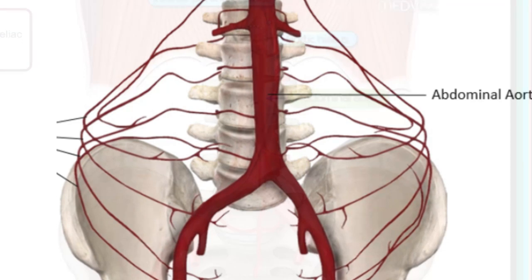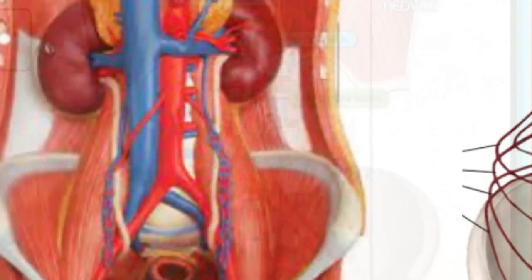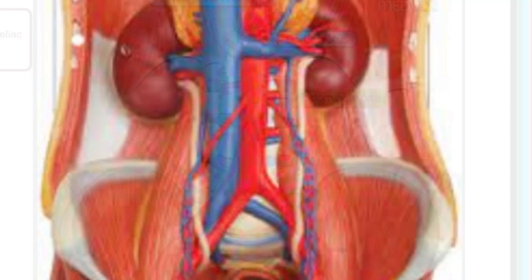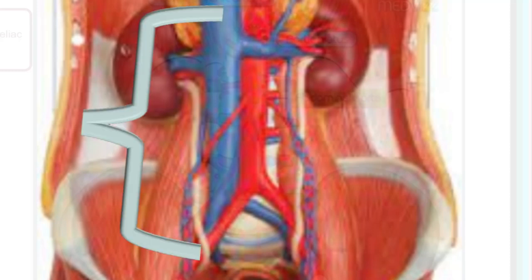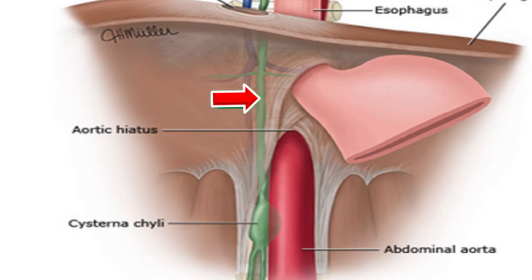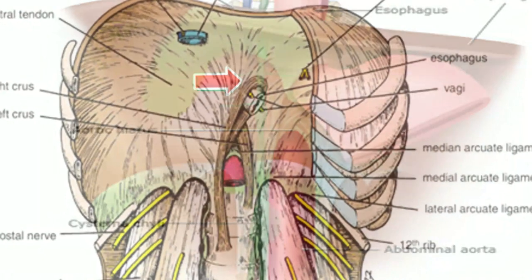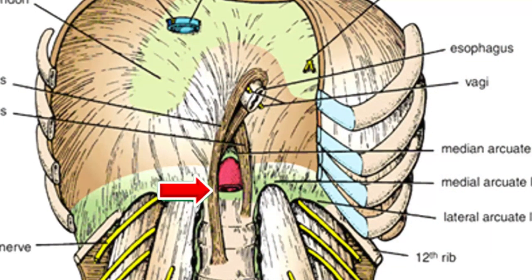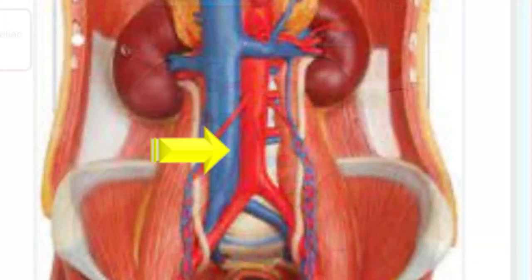On the right side, structures forming the relation include the cisterna chyli, the thoracic duct — which entered with the aorta at the T12 aortic opening — the azygous vein, the right crus of the diaphragm, and the inferior vena cava.